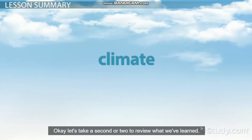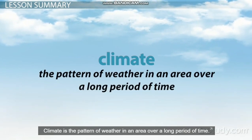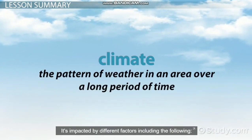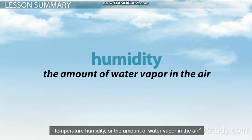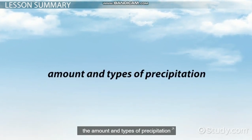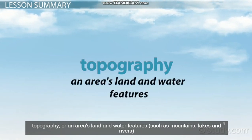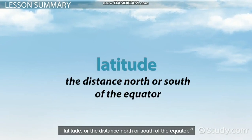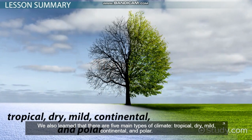Let's take a moment to review what we've learned. Climate is the pattern of weather in an area over a long period of time. It's impacted by different factors, including temperature; humidity, or the amount of water vapor in the air; distance from bodies of water; wind; the amount and types of precipitation; topography, or an area's land and water features such as mountains, lakes, and rivers; latitude, or the distance north or south of the equator; and elevation, or how far above sea level the area is located.